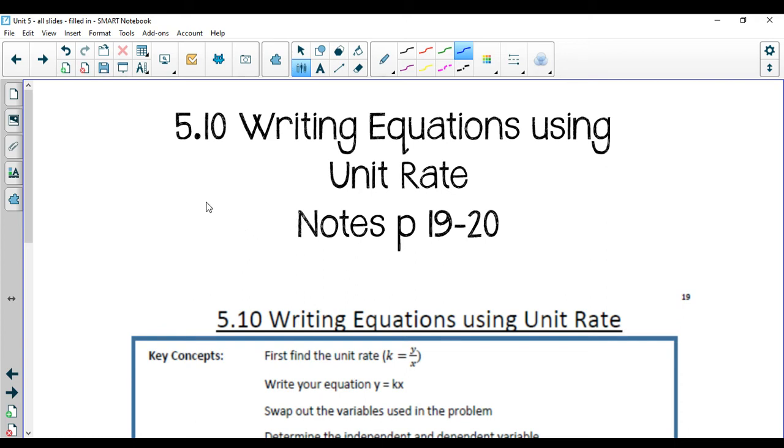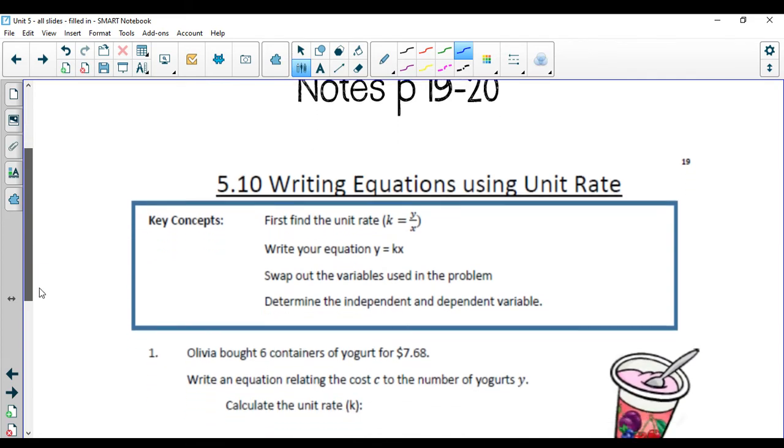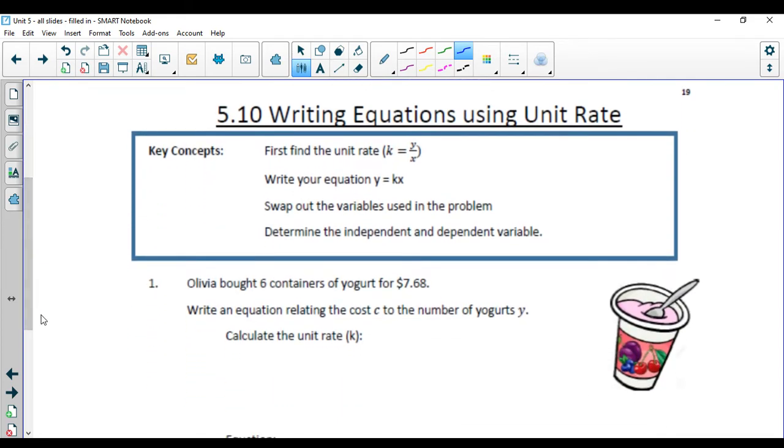Lesson 5.10 is writing equations using the unit rate. We're in your notes packet on pages 19 and 20. What we're going to do today is take a real-world scenario. We're going to first figure out our unit rate, which we've also learned has been called k, or constant of proportionality. We're going to write our equation y equals kx. We'll swap out the variables for the ones that are listed in the problem, and then we'll also talk about the dependent and independent variables.